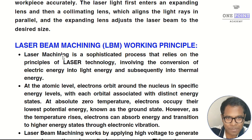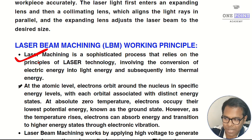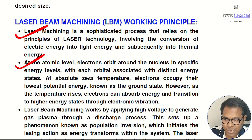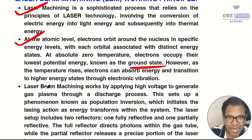To understand the working principle of laser beam machining, we need to look at the electron level. Overall, laser beam machining involves the conversion of electrical energy to light energy and finally into thermal energy. At the atomic level, electrons orbit the nucleus in specific energy levels, with each orbital associated with distinct energy states. At absolute zero, electrons occupy their lowest potential energy — the ground state. As temperature rises, electrons absorb energy and transition to higher energy states through electronic vibration.